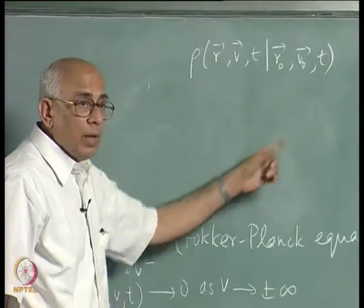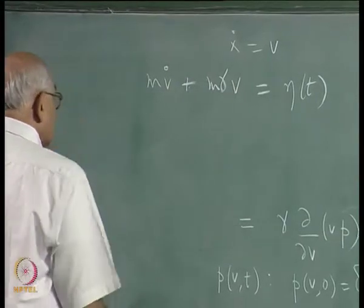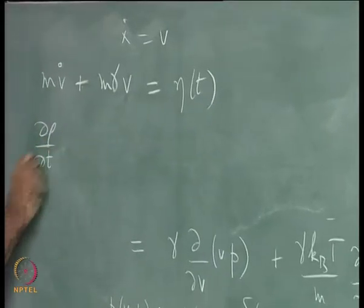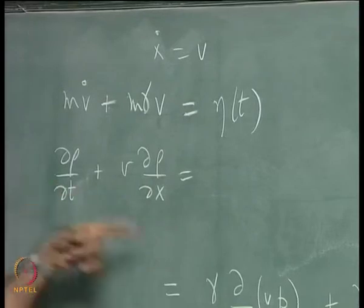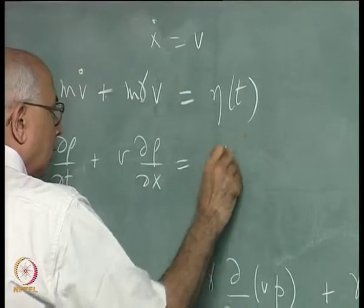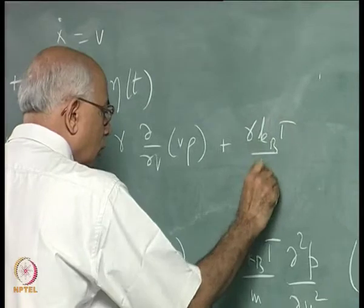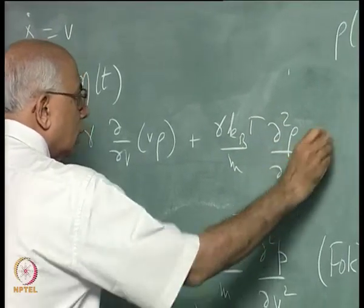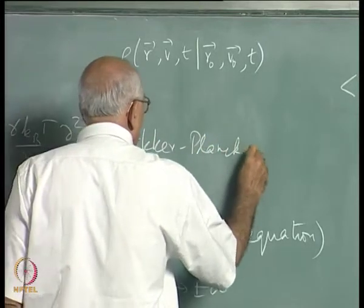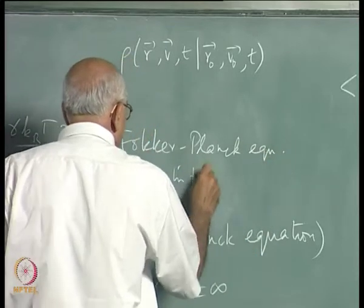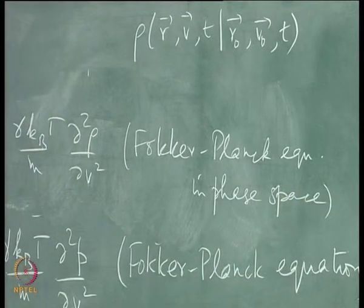Let us first do this for one dimension then write it immediately in three dimensions. The equation turns out to be ∂ρ/∂t + v·∂ρ/∂x = γ·∂/∂v(v·ρ) + γ k_B T/m · ∂²ρ/∂v². This is the Fokker-Planck equation in phase space — nothing much has changed; you have added the convective term v·∂ρ/∂x on the left, which is like a total time derivative of ρ.